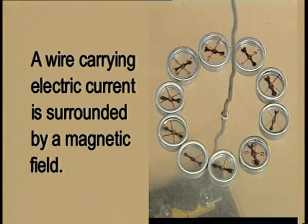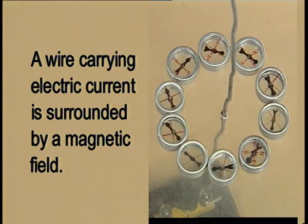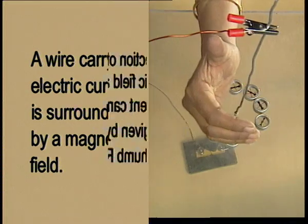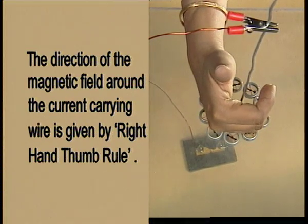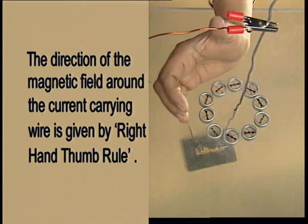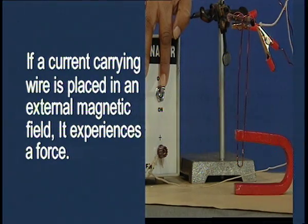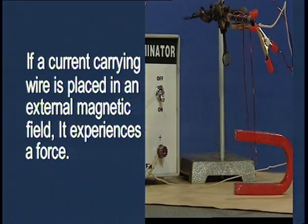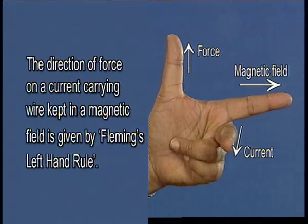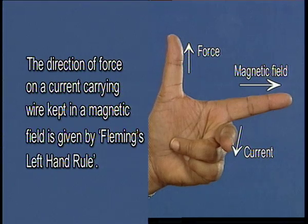A wire carrying electric current is surrounded by a magnetic field. The direction of magnetic field around the current carrying wire is given by the right hand thumb rule. If a current carrying wire is placed in an external magnetic field, it experiences a force. The direction of force on a current carrying wire kept in a magnetic field is given by Fleming's left hand rule.